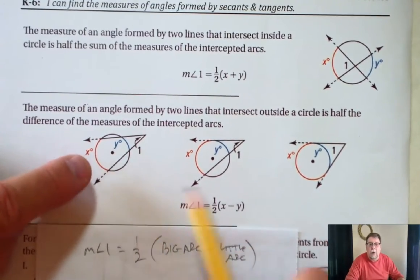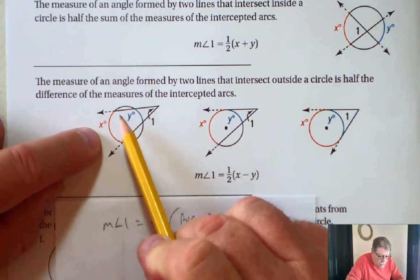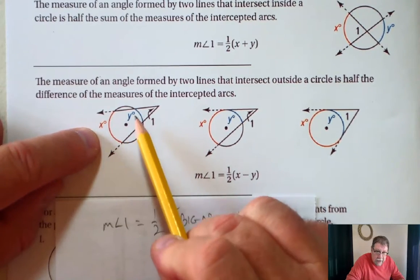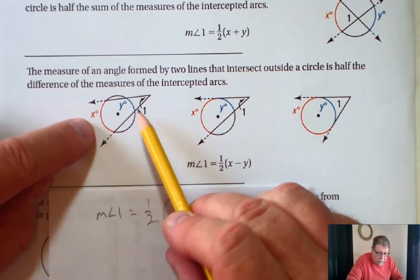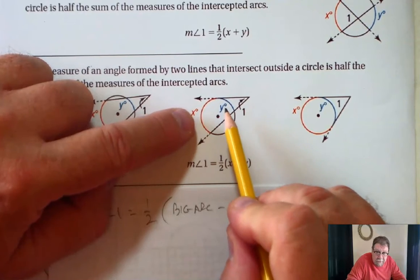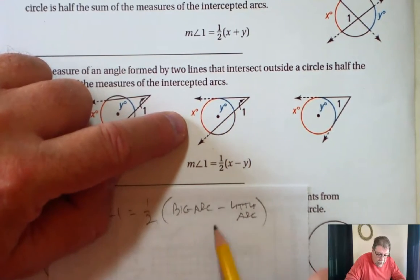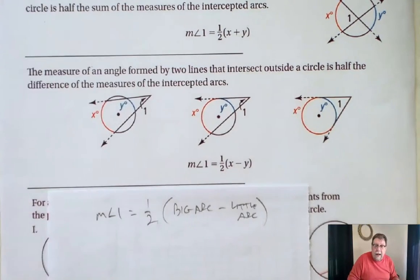So if you'll notice, there are always two arcs inside here. So I've got this angle goes through, it creates a large arc and a smaller arc, arc X, arc Y. I take half of the big one minus the little one. Here, I've got two arcs. There's a point of tangency right there, but I'd have two specific arcs here. The big one minus the small one, half of that. Over here, same thing. Big one minus the small one, half of that.